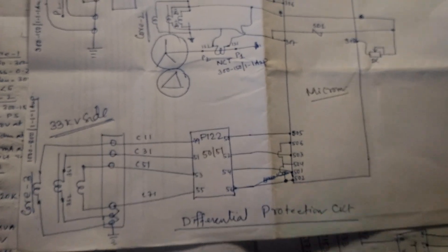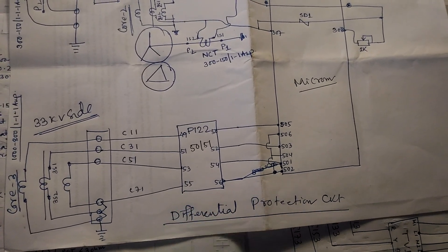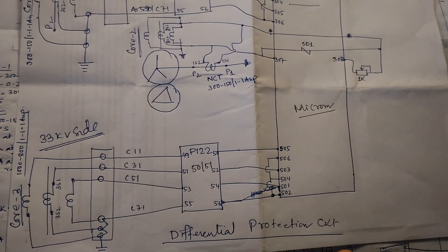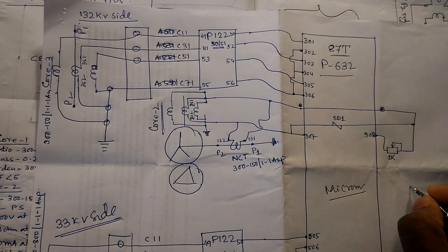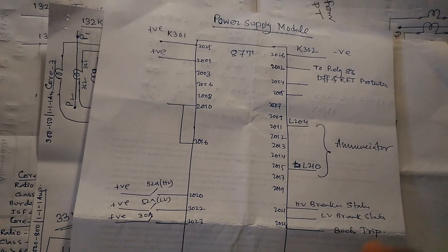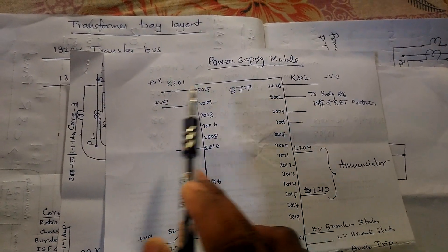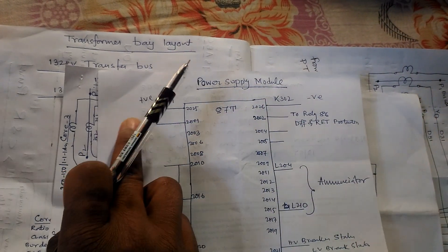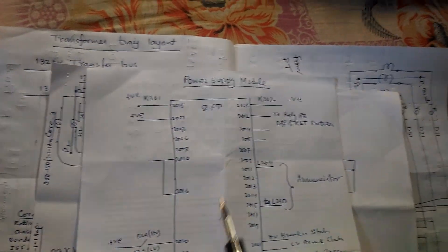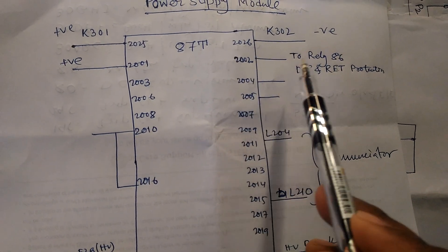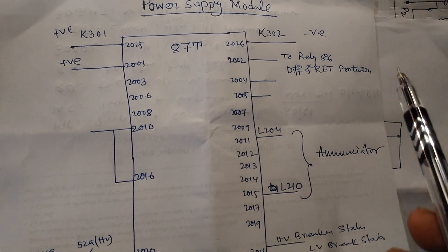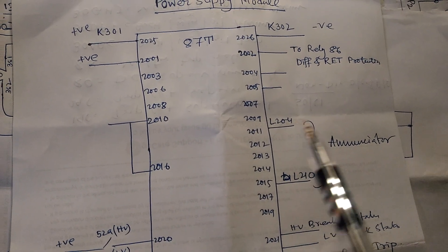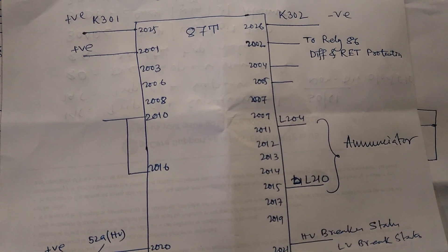We are giving power supply to the 87-80 relay from K301 and K302 terminals — K301 is the positive DC terminal and K302 is the negative DC terminal. The 86 differential and REF protection relay output is connected, and L-type terminals are used for the enunciators.